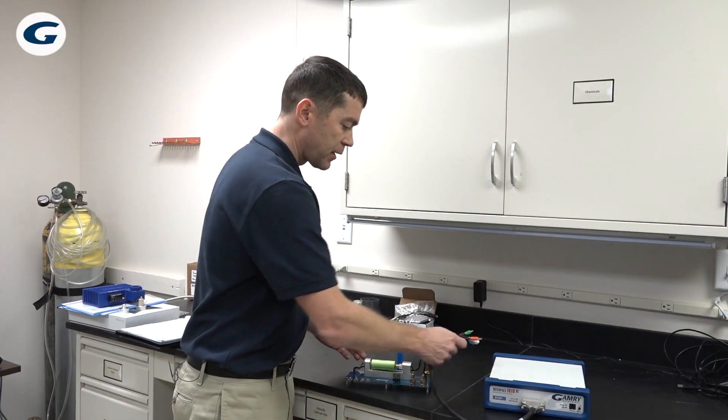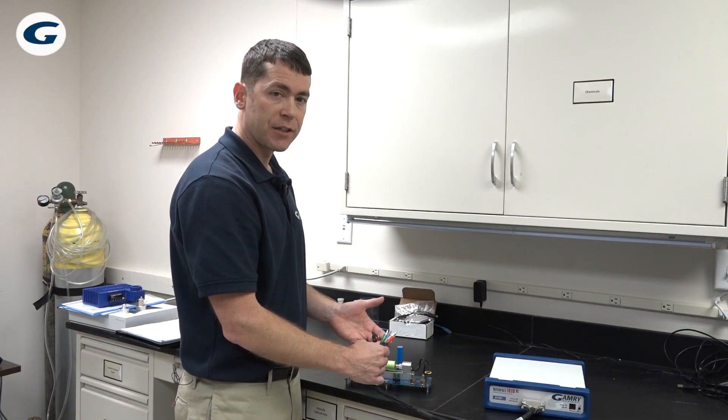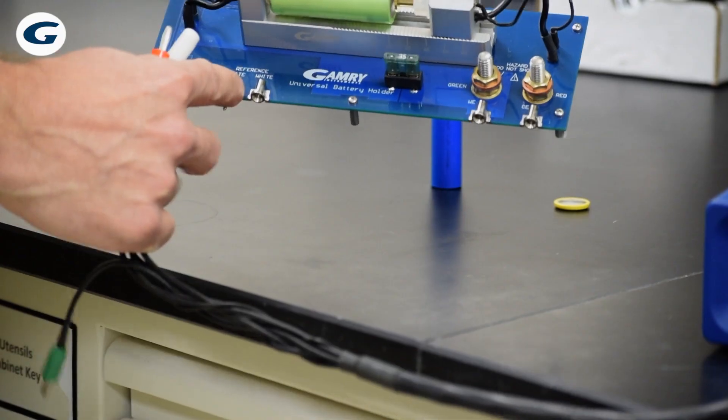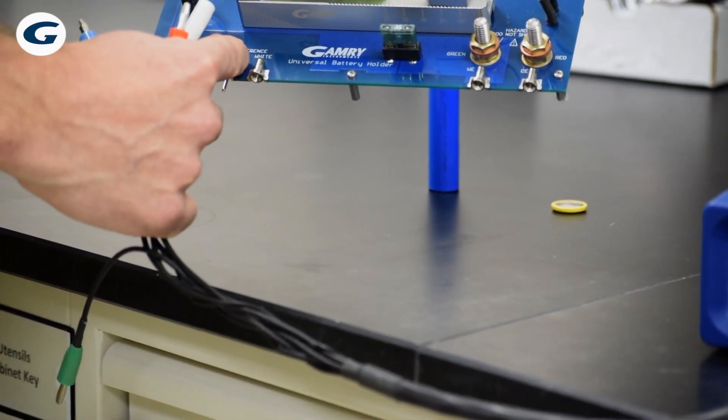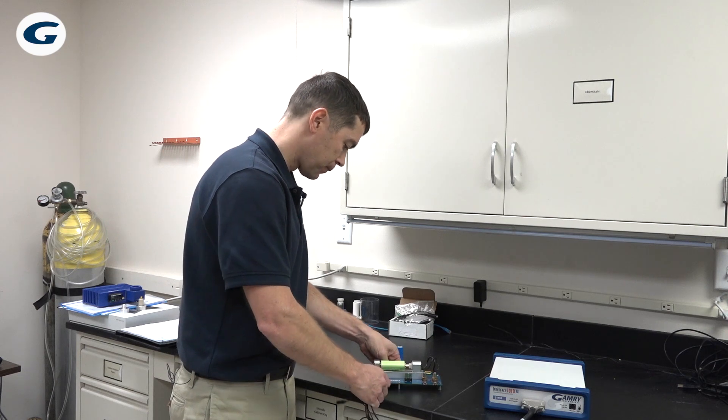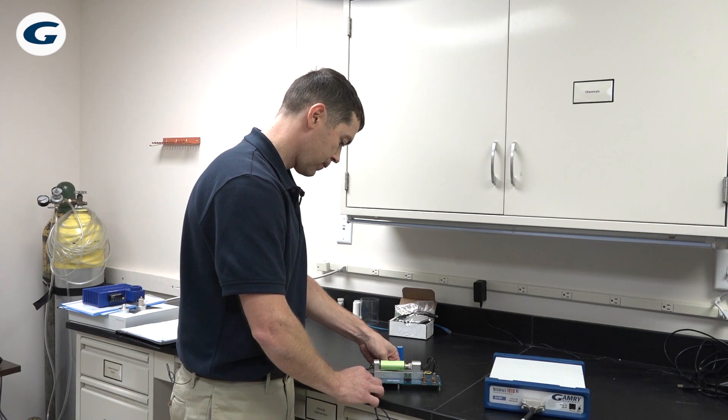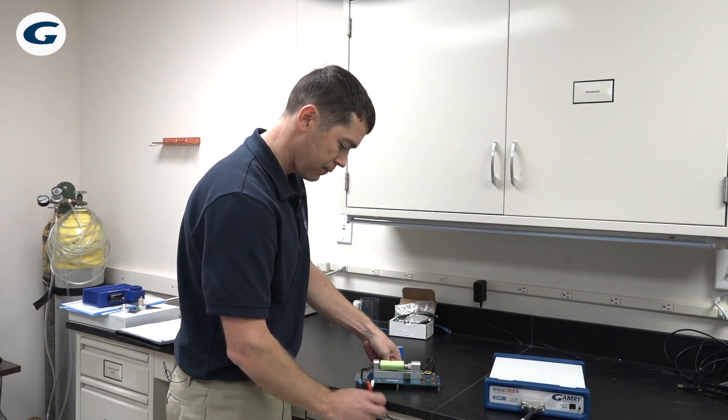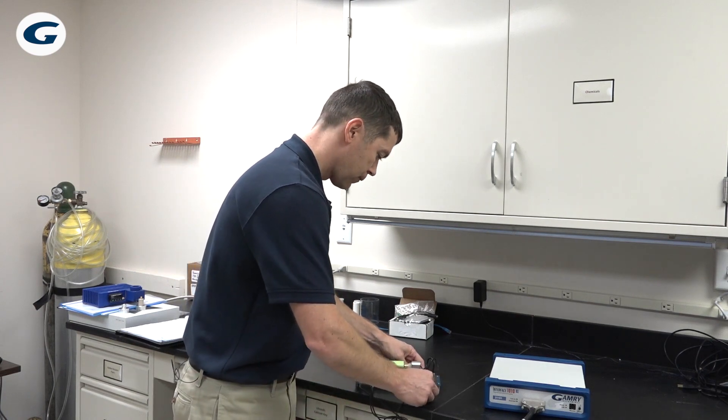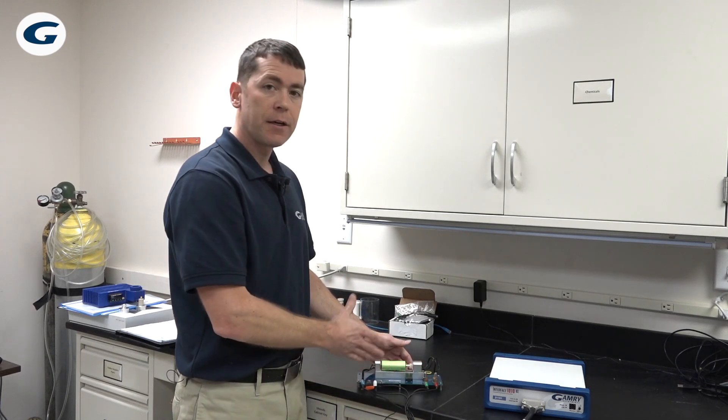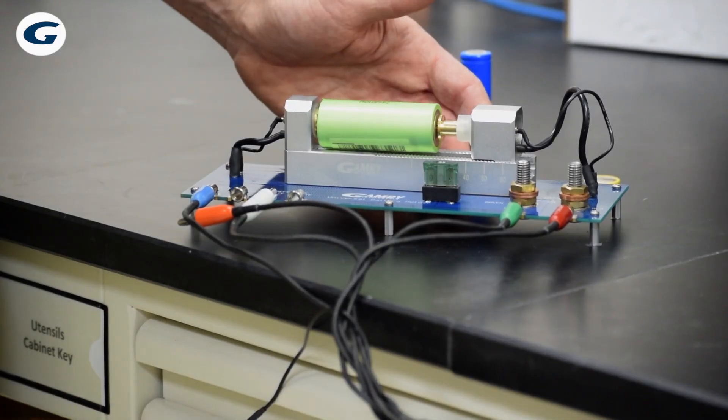Then we take the cable from a potentiostat and we make connections to the Universal Battery Holder. All the connections are labeled for you so it's really easy to do. Now we've made our connections and we can run all the experiments that we want to.